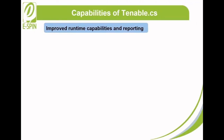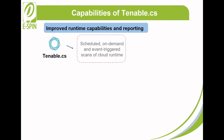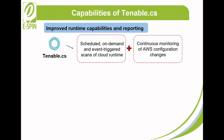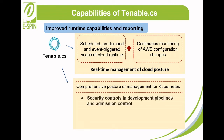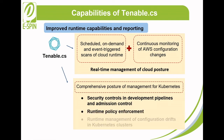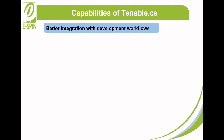Improved runtime capabilities and reporting. Alongside scheduled, on-demand, and event-triggered scans of the cloud runtime, Tenable CS also features continuous monitoring of AWS configuration changes that enable real-time management of cloud posture. Comprehensive posture management for Kubernetes is also included in Tenable CS, which covers security controls in development pipelines and admission control, runtime policy enforcement, and runtime management of configuration drifts in Kubernetes clusters.